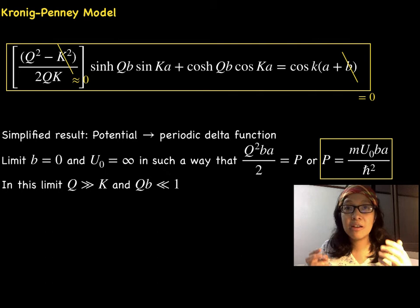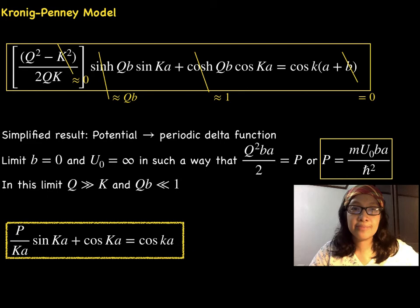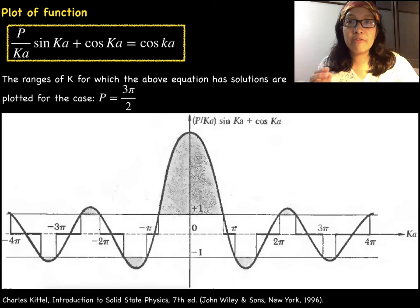In this limit q is much greater than k and qb is much less than 1. So we got a reduced equation here. If we plot the left side of the equation for values of Ka with a capital K, the resulting plot is shown